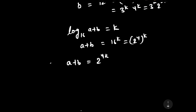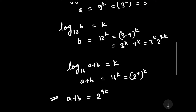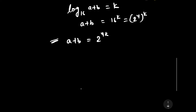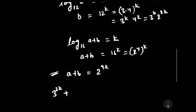Now we can substitute the values of A and B into this equation. The value of A is 3 to the power 2k, plus the value of B which is 3 to the power k times 2 to the power 2k, and this equals 2 to the power 4k.